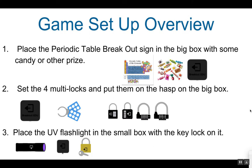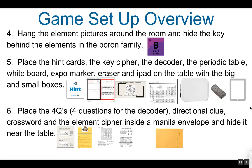To set up the game, you will first need to place the periodic table breakout sign in the big box with some candy or another prize. Set the 4 multi-locks as previously mentioned and put them on the hasp on the big box. Place the UV flashlight in the small box with the key lock on it. You will need to hang the element pictures around the room and hide the key behind the elements in the boron family.